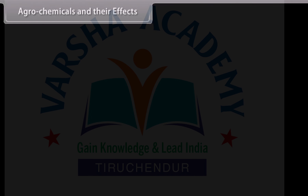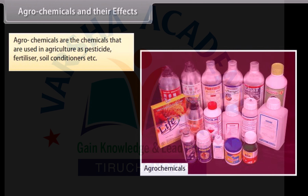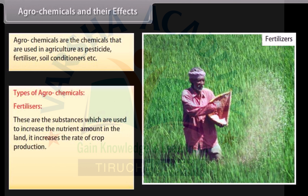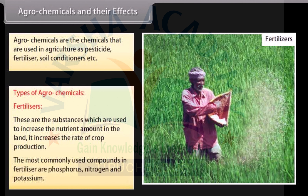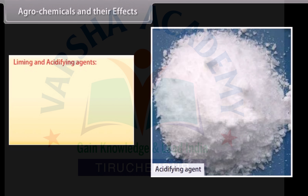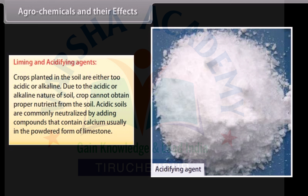Agrochemicals and Their Effects: Agrochemicals are chemicals used in agriculture as pesticides, fertilizers, soil conditioners, etc. Fertilizers are substances used to increase the nutrient amount in the land and increase the rate of crop production. The most commonly used compounds in fertilizer are phosphorus, nitrogen, and potassium. Crops planted in soil that is either too acidic or alkaline cannot obtain proper nutrients. Acidic soils are commonly neutralized by adding compounds containing calcium, usually in the powdered form of limestone.